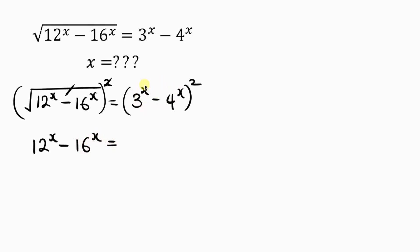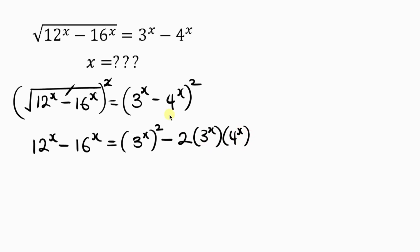What we have on the right hand side can be expanded. I'm going to square the first term: 3 to power x, raised to power 2. Then the middle term: 2 times 3 to power x times negative 4 to power x, giving minus 2 times 3 to power x times 4 to power x. Finally, squaring negative 4 to power x gives 4 to power x raised to power 2.